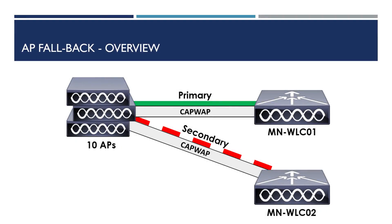As we know, we can prime APs with a primary, secondary, and tertiary controller. In our example we've got two controllers: WLC01 and WLC02. WLC01 is the primary controller for our APs and WLC02 is the secondary. By default, if our primary controller is online and active, our APs configured to use it will join it. As such, all of our APs are currently associated to WLC01.